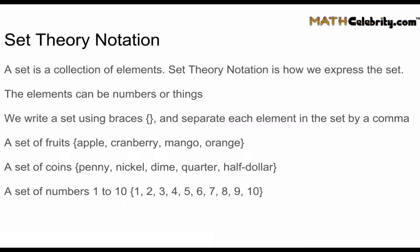We can have a set of coins: penny, nickel, dime, quarter, half dollar. And then finally an example set of numbers from one to ten. So we just list out all the numbers from one to ten. And as you see in the three sets here we've got the braces notation and each element is separated by a comma.